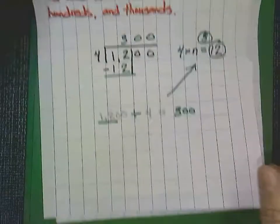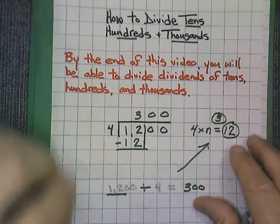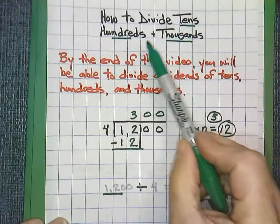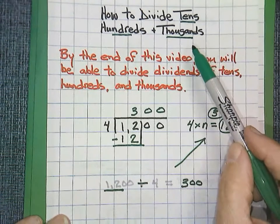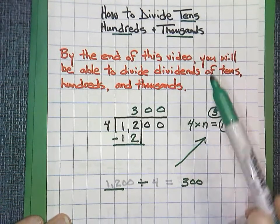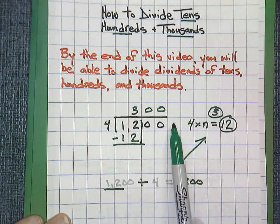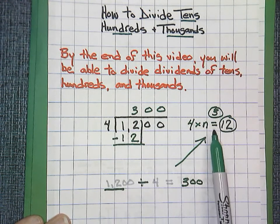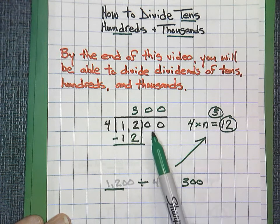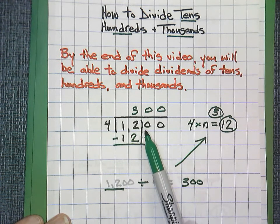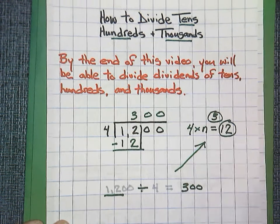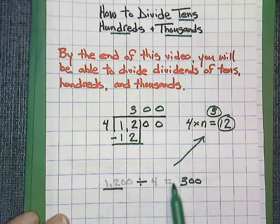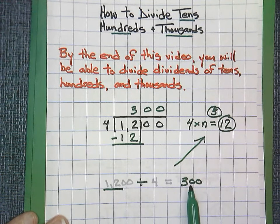To review today: our lesson was how to divide tens, hundreds, and thousands. We worked from left to right, used our multiplication knowledge to solve division, counted the total number of zeros in the dividend, and wrote that total number of zeros. We also reviewed how to show division in standard form. Thanks, everybody — we'll see you next time.